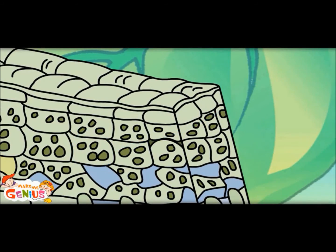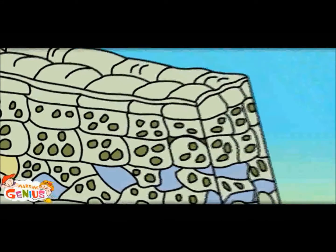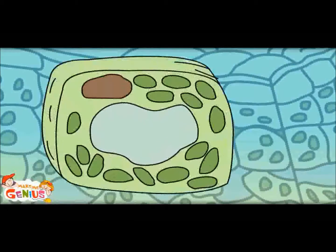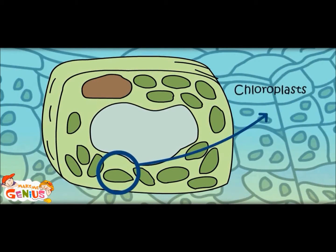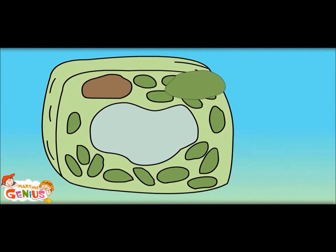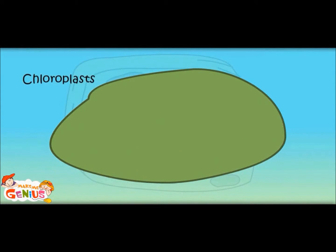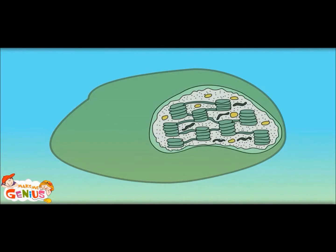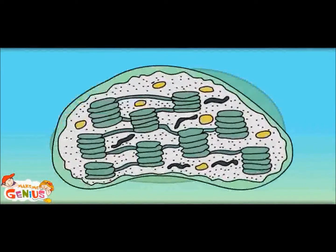What is inside these cells? Let me show you. What are these green blocks? These are called chloroplasts. The green color of leaves is because of these chloroplasts. In chloroplast cells, there is a chemical called chlorophyll, which gives green color to the plants.